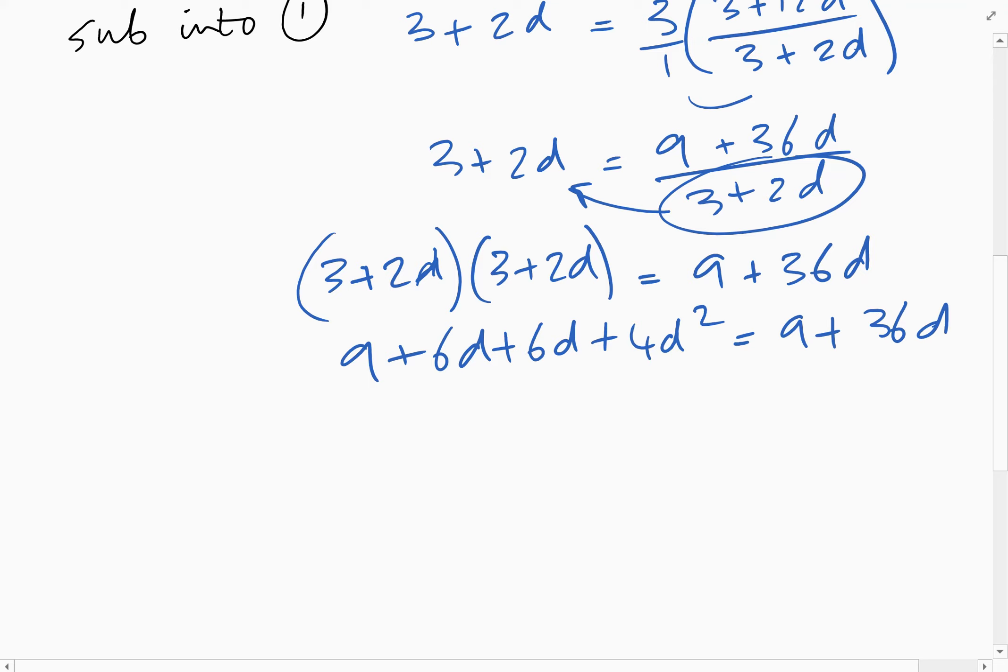Let's collect everything on the left-hand side. So 4d squared, 12d minus 36d, that's going to be minus 24d, and then these nines are just going to cancel out.